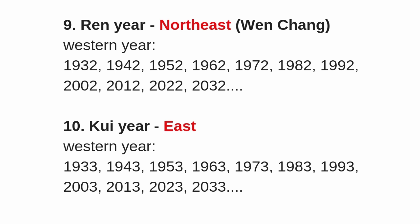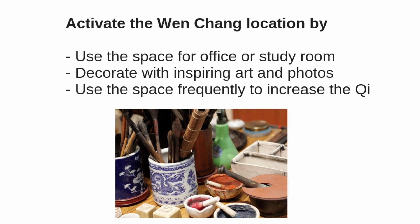You can check your western birth year and find your direction from this chart. After finding your Wenchang location, you can use the space for study, office work, or any work-related activities. You can decorate it with inspiring art, sculptures, or photographs. The basic rule is to use this space frequently to increase the Qi movement and bring in good Wenchang luck. If this location is a restroom or you cannot use this space, then use the house facing technique to find your Wenchang location, as mentioned in the last video.